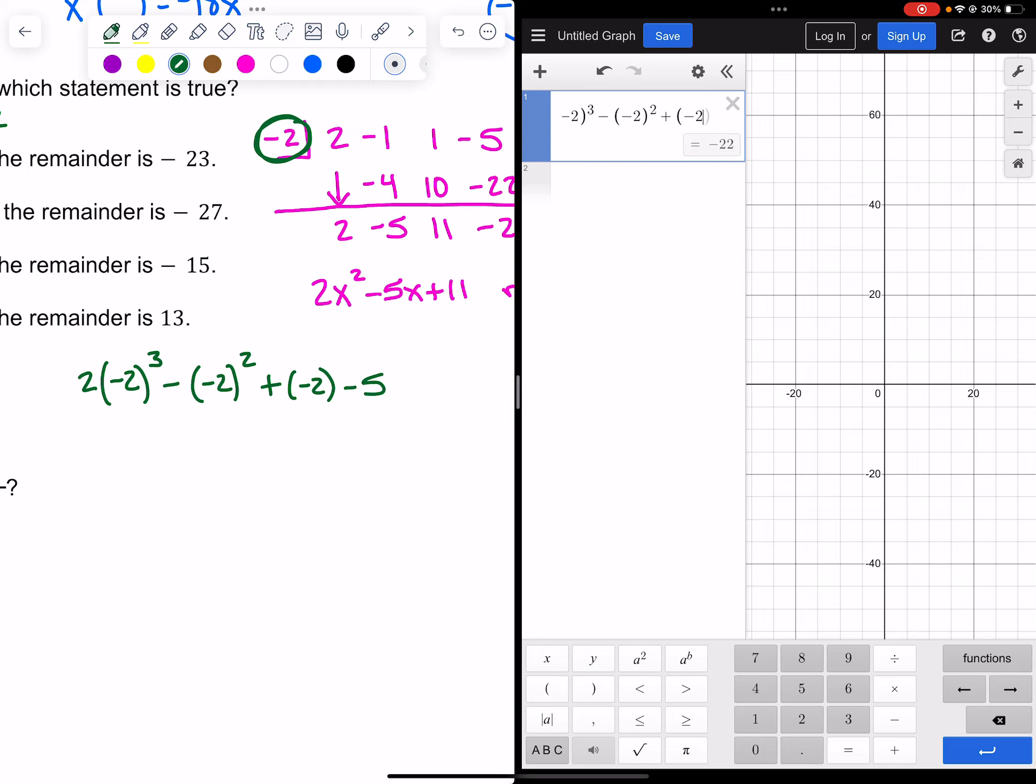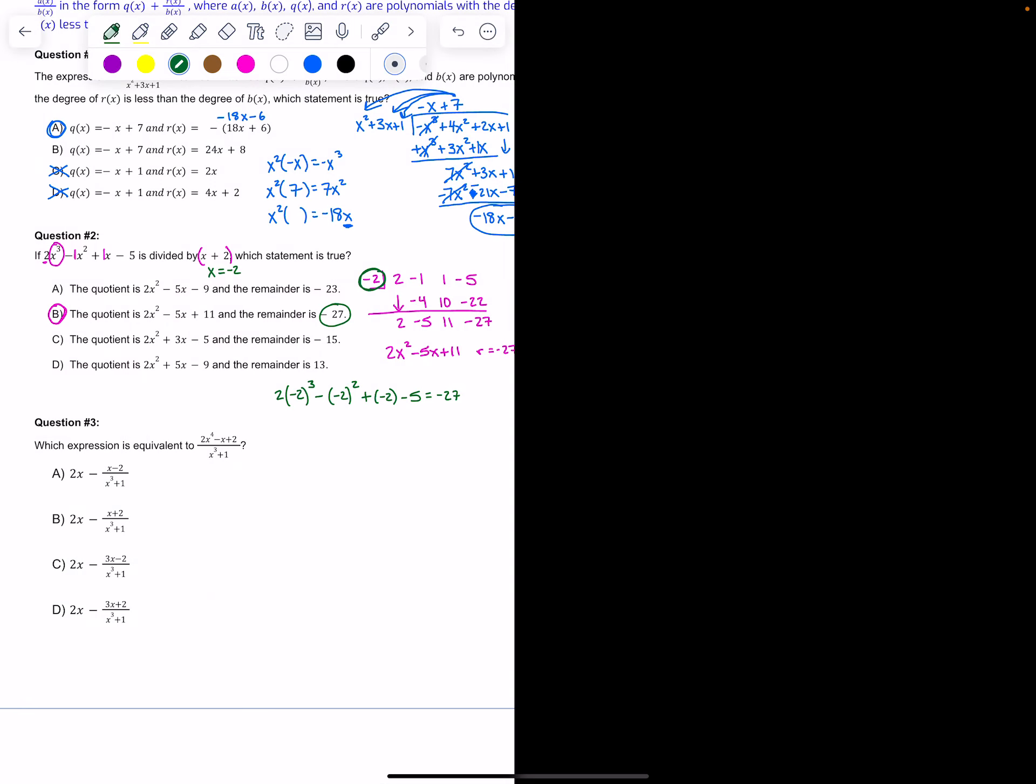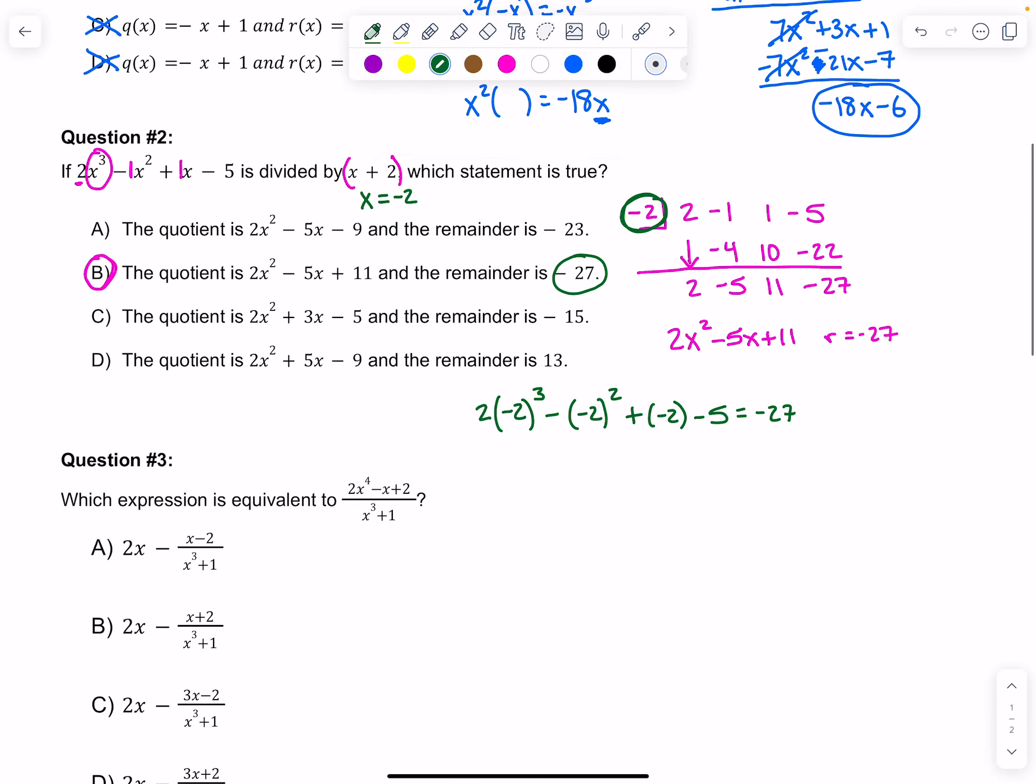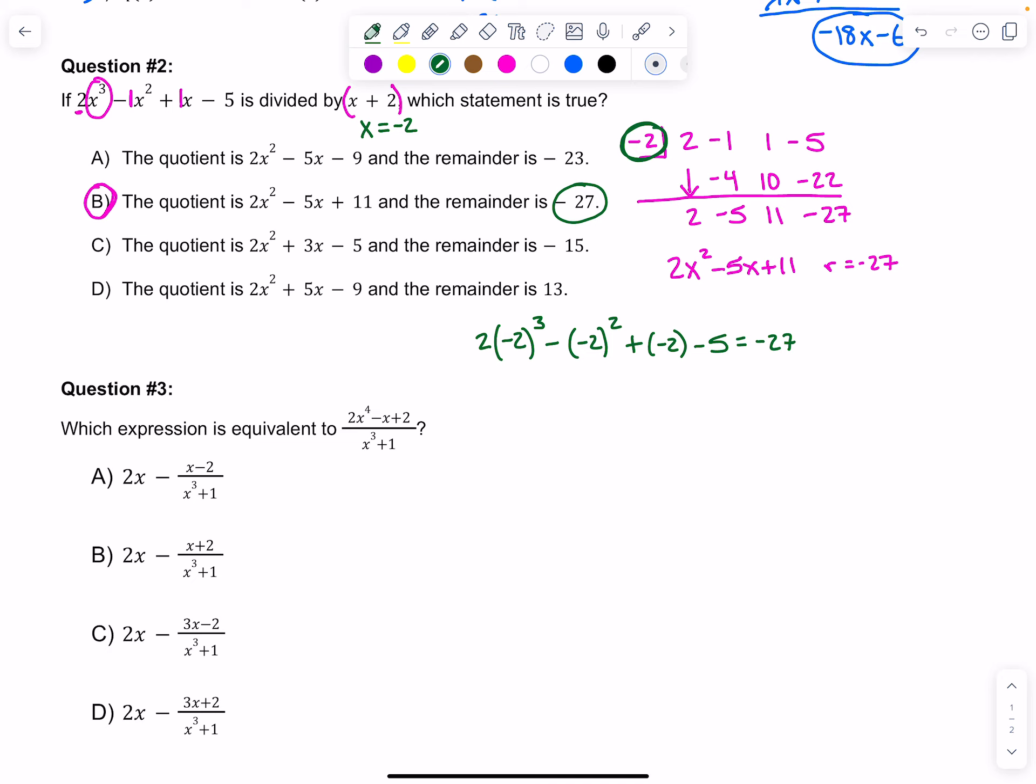I get a remainder of negative 27, which B was the only one with that option. That would be a way you could solve this since the answer choices didn't repeat a value for the remainder.